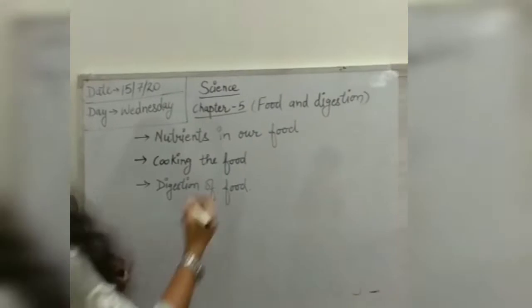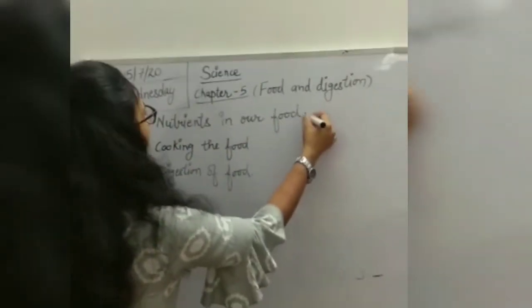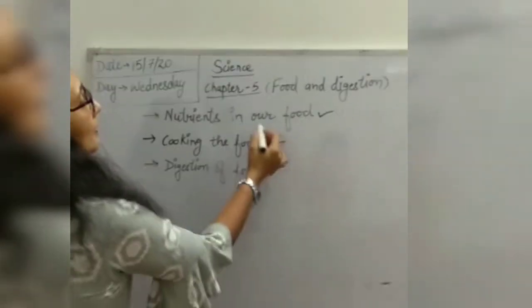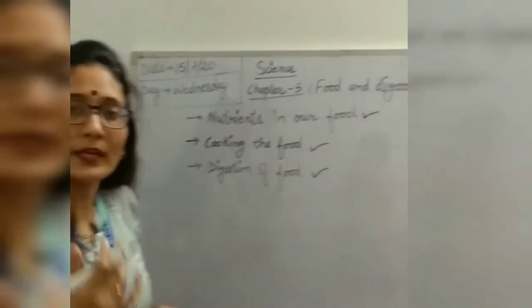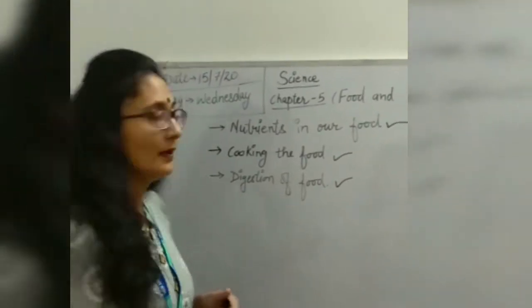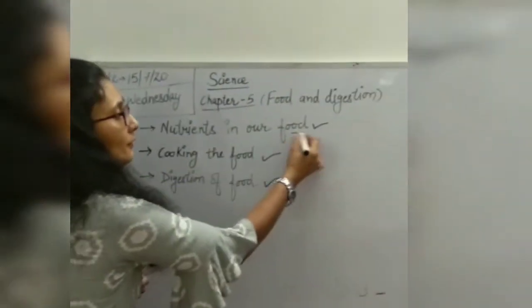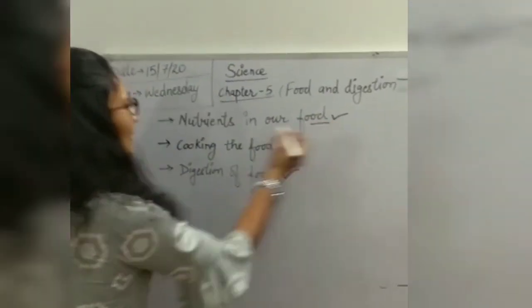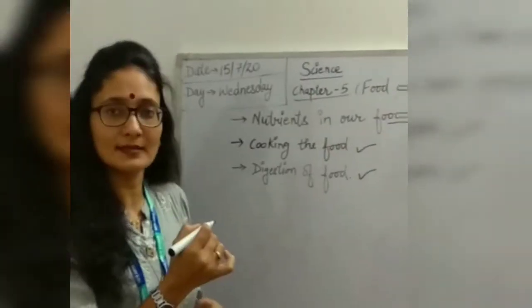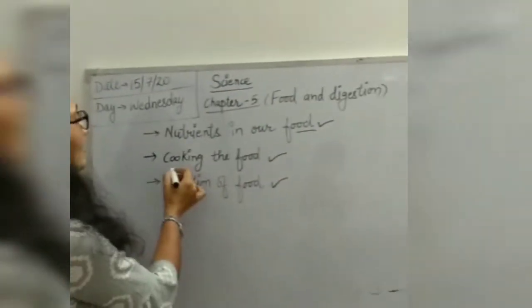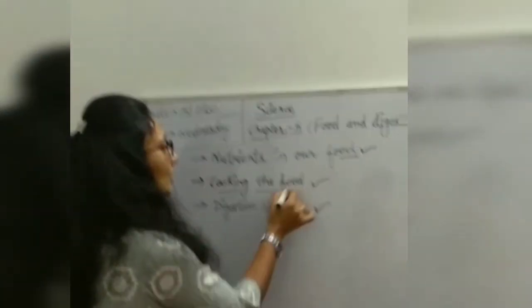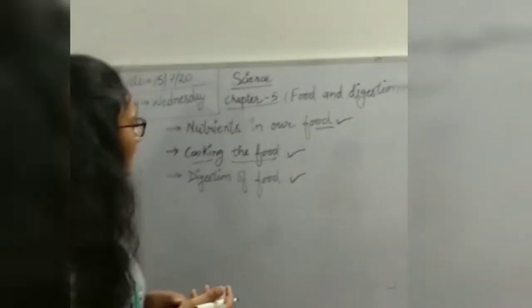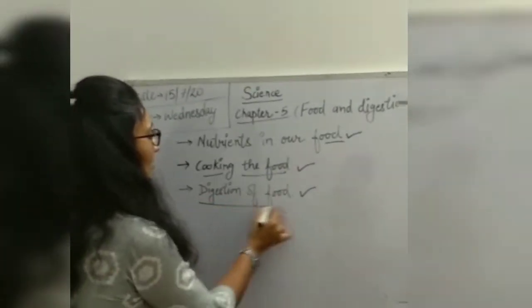In this chapter we will cover these topics: nutrients in our food, cooking the food, and digestion of food. We will read about what nutrients are present in our food, how we can preserve and cook the food.